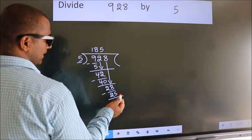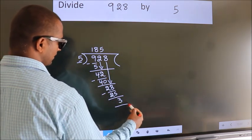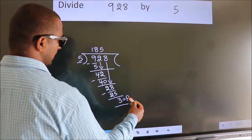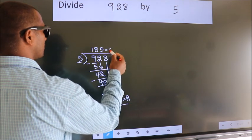No more numbers to bring it down. So we stop here. This is our remainder. This is our quotient.